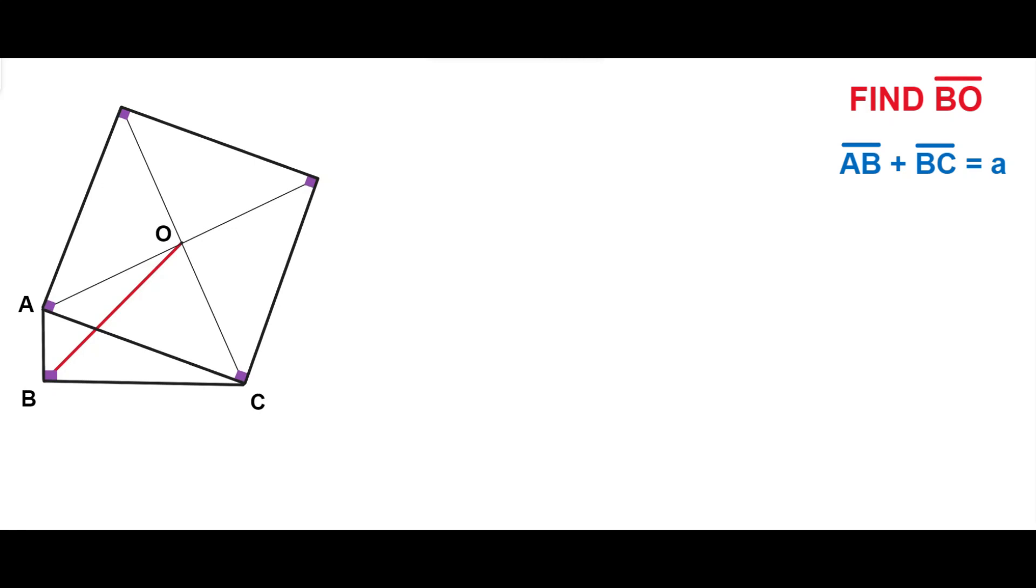Welcome to Geometry Masterclass. In this video we have a right triangle and a square where one of the sides of the square coincides with the hypotenuse of the right triangle.